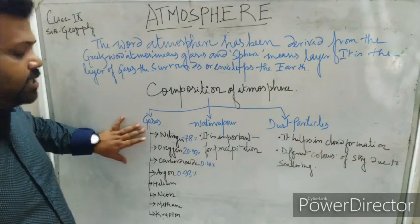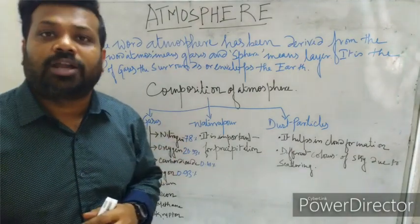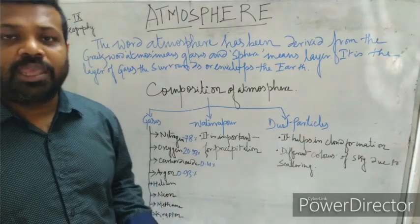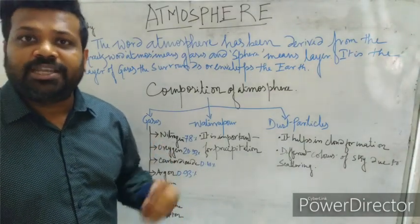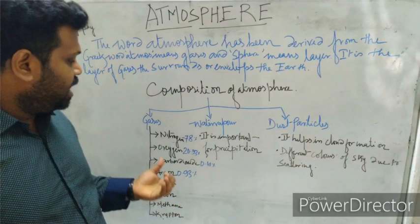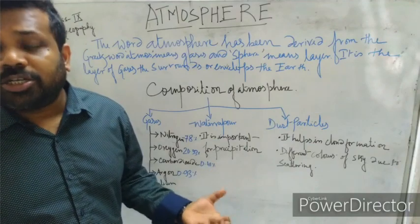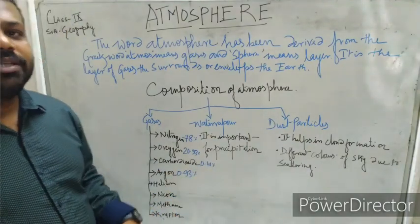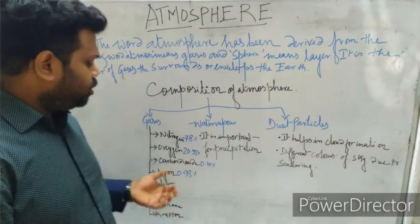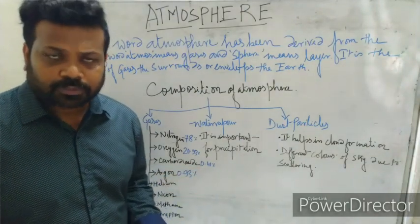We have to read about the importance of nitrogen, oxygen, and carbon dioxide — the three main gases important to us. Nitrogen is important for the growth of plants; it also retards the process of oxidation and is also used for making nitrogen fertilizers. Oxygen is used for breathing and helps in combustion. Carbon dioxide is used by green plants for making food through the process of photosynthesis.